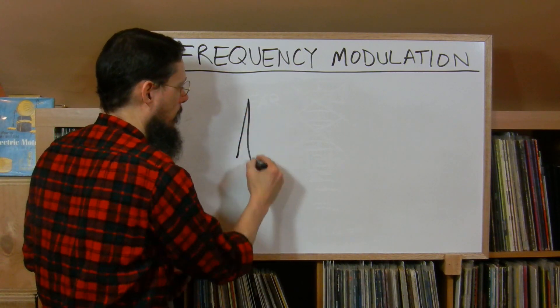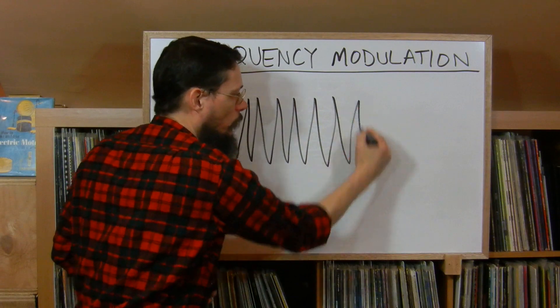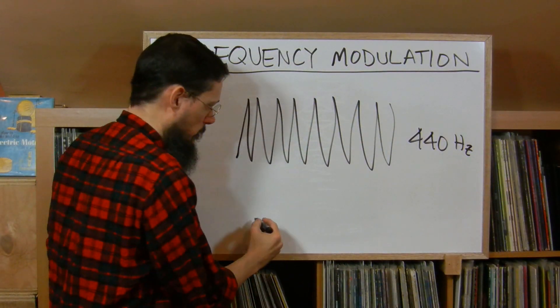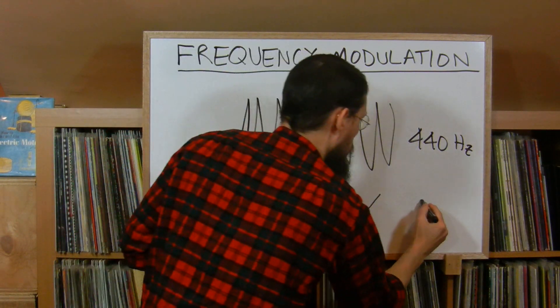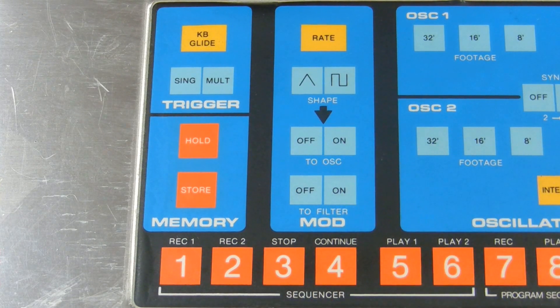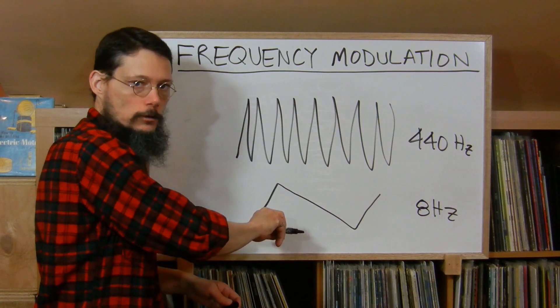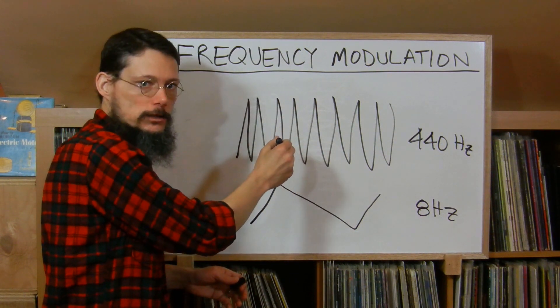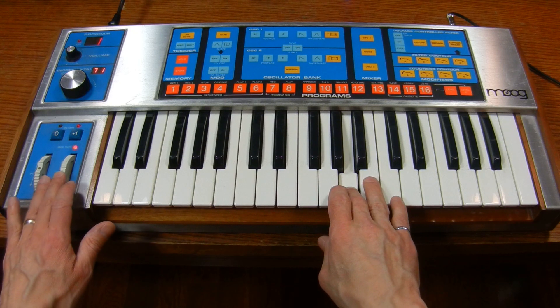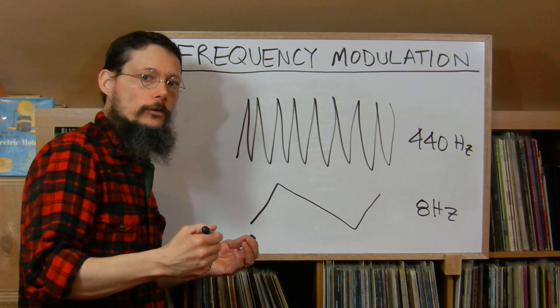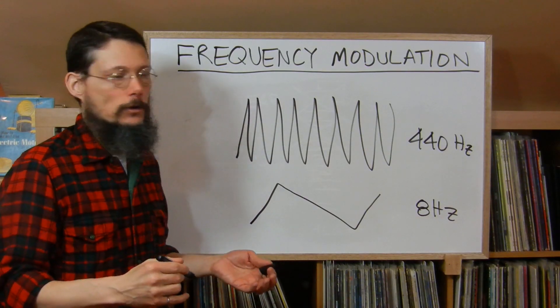Say you had one oscillator at some audio rate, say A440. And then you had another oscillator that was much slower — an LFO running at only say eight to ten hertz, let's say eight hertz. If you took the amplitude output of the modulating oscillator and used it to vary the pitch of the main oscillator, the result is vibrato, and you've done this countless times on a monosynth or on a modular.